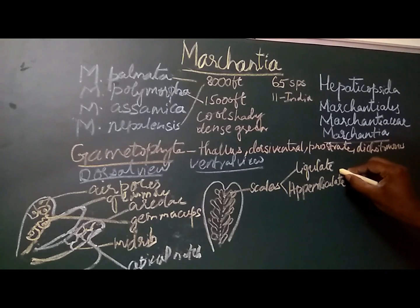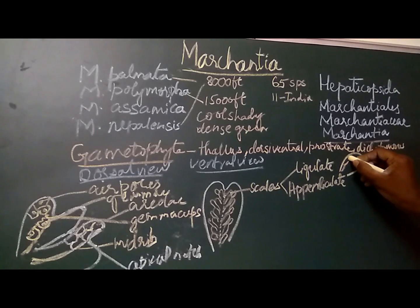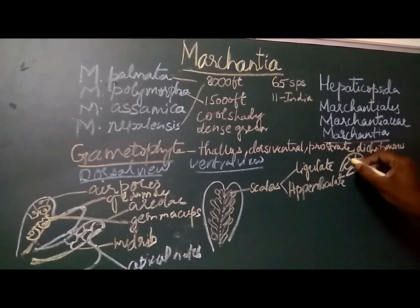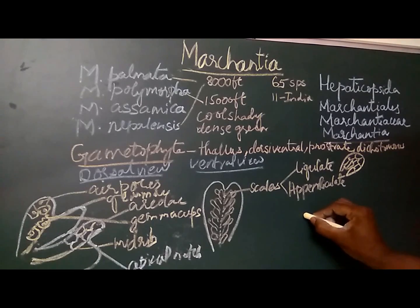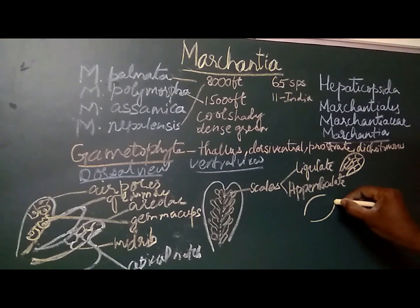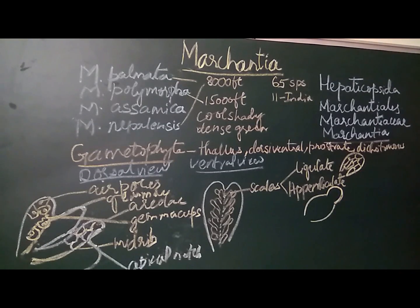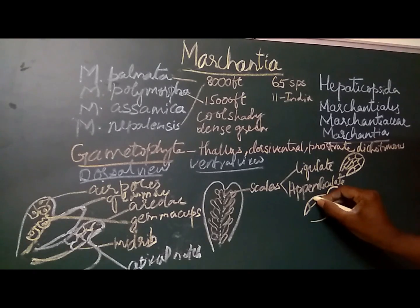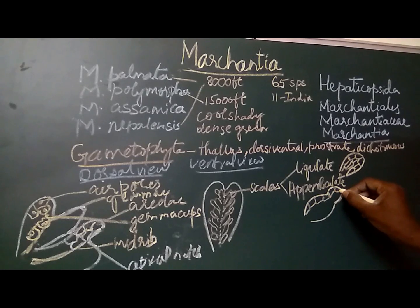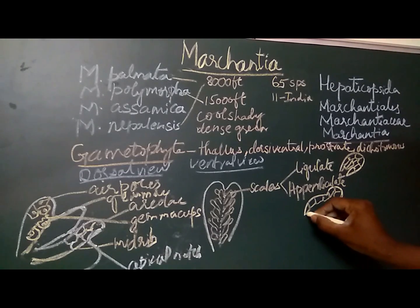Scales of Marchantia are of two types: ligulate scales and appendiculate scales. The ligulate scales are simple membranous structures, multicellular in structure but single-celled in thickness. The appendiculate scales are similar to ligulate scales, but they have a constriction in the apical region because of which the apex is drawn into a sub-rounded structure. These appendiculate scales are also multicellular but single-celled in their thickness.